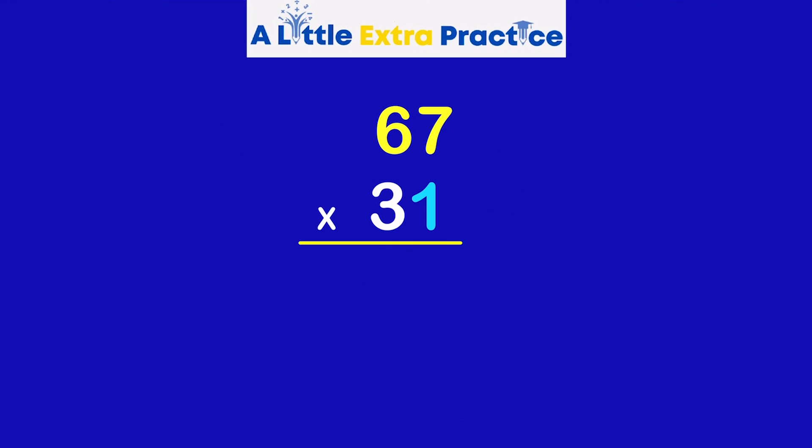Taking a look at the first problem, 67 times 31. First, I'm going to multiply the number in the ones place, which actually is a 1 times 67. That will be the first partial product. The second partial product will be multiplying the number in the tens place times 67. And the number in the tens place, of course, is 3.